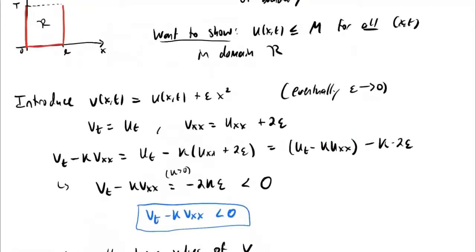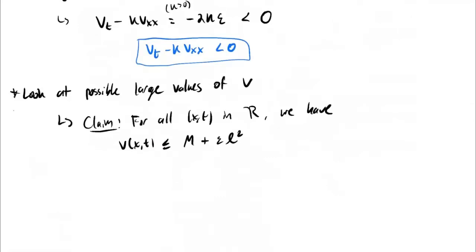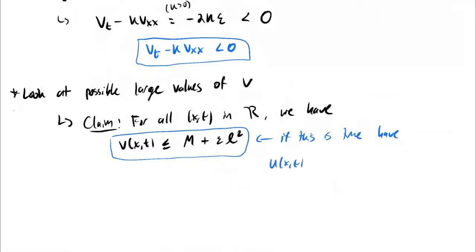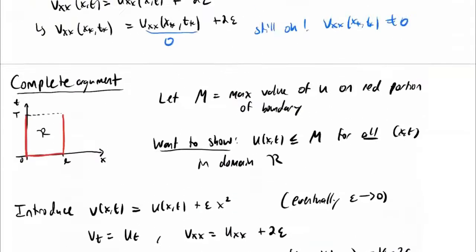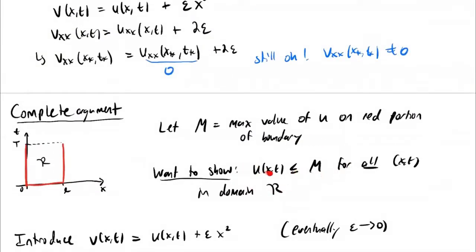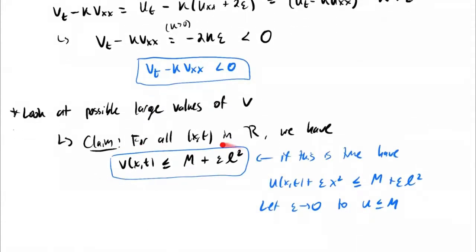Notice it's enough to prove this claim. Because if this is true: on the left hand side we have U of x, t plus epsilon x squared, and on the right hand side is less than or equal to M plus epsilon L squared. Then we just let epsilon go to zero to get U is less than or equal to M. This is true for any point, so at every point U is less than or equal to M — U is always smaller than a certain value on the boundary, which is what we were trying to prove. It suffices to prove this claim for our perturbation function V.